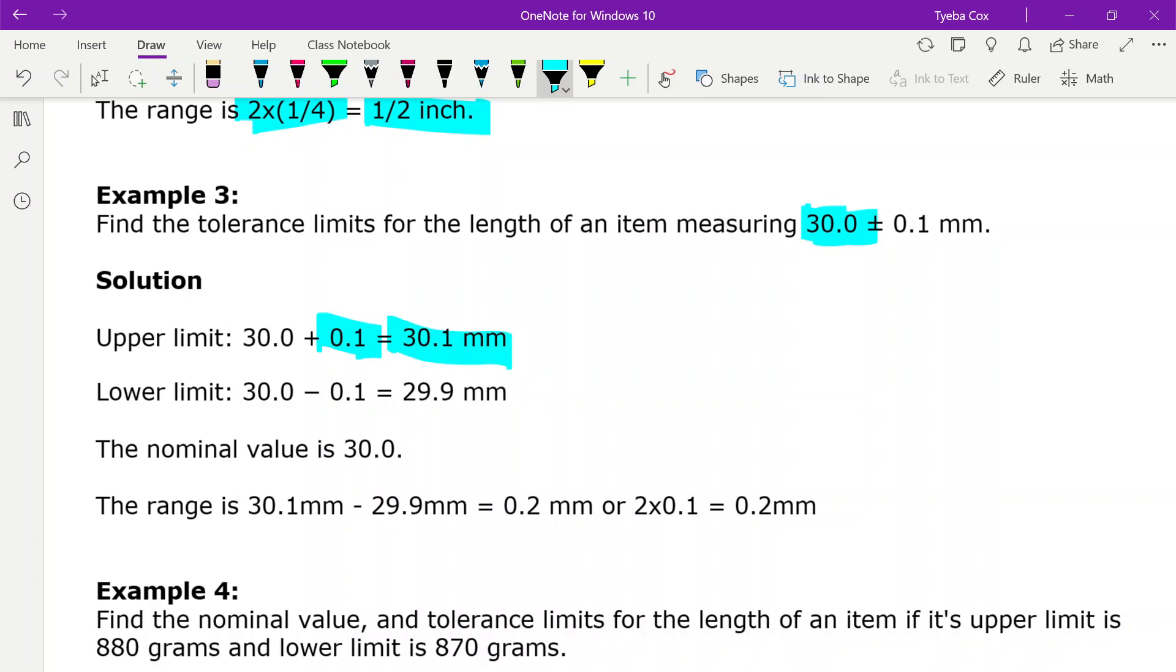Our lower limit is our target value, which is the 30, minus our 0.1, which ends up being 29.9 millimeters. And our nominal value, our target measurement, is our 30 millimeters. Now the range is going to be your max minus your min. And that's going to give you 0.2 millimeters. Or you can take the tolerance, multiply it by 2, and get the same value.